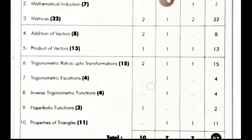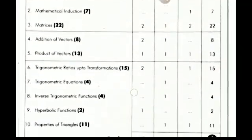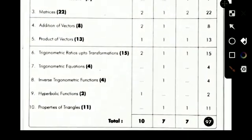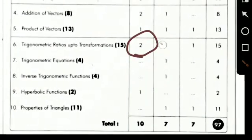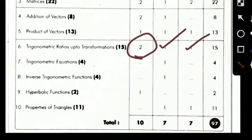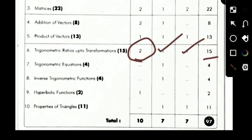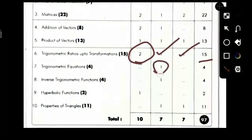Coming to the trigonometry, there are 5 topics. This is the first part and this is the second part. From trigonometry, the first topic is Trigonometric Ratios up to Transformations. From this topic, 2 two-marks questions, 1 four-marks question, 1 seven-marks question. Total 15 marks. Next topic, Trigonometric Equations: from this, 1 four-marks question will come.